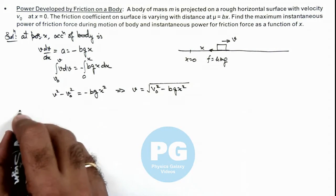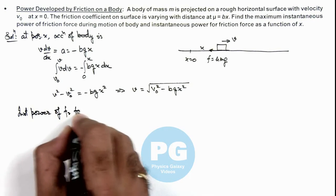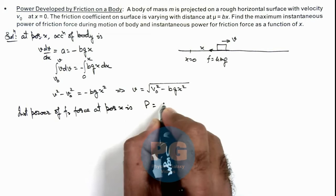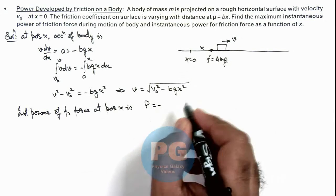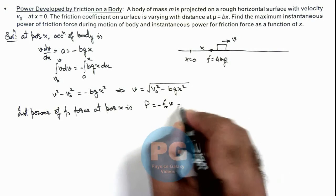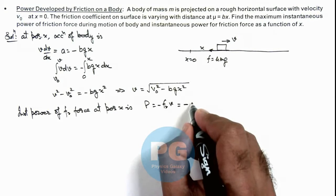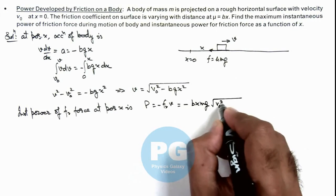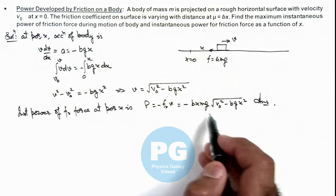The instantaneous power of the friction force at position x can be written as follows: since friction is opposite to velocity, it is negative when we take power as F·v. So the power is minus friction multiplied by speed. The friction acting here is mu·mg, which equals bxmg. Therefore, the instantaneous power is minus bxmg multiplied by the square root of (v₀² minus bgx²). This is the answer for instantaneous power of friction as a function of x.